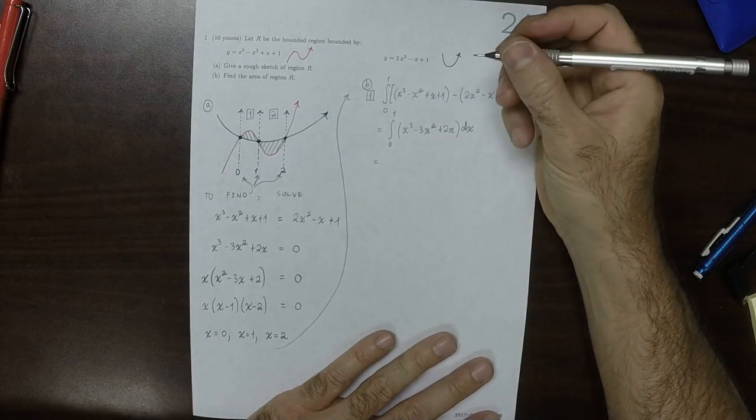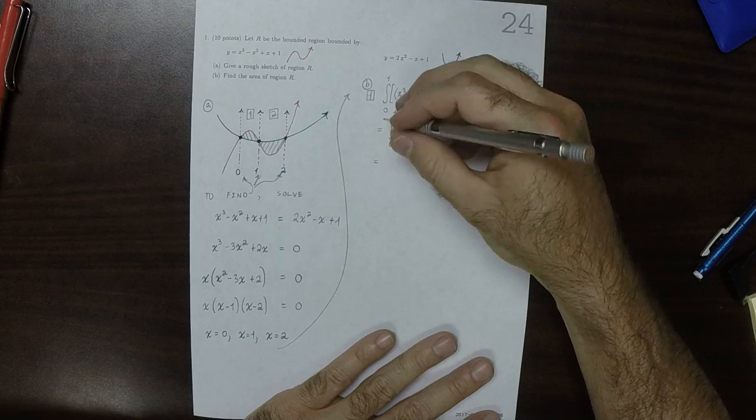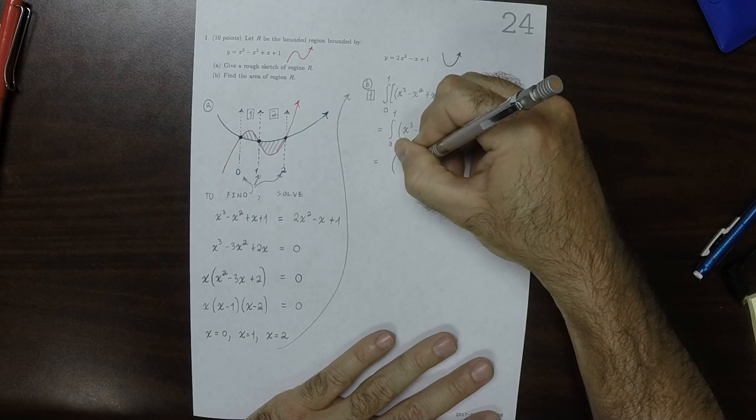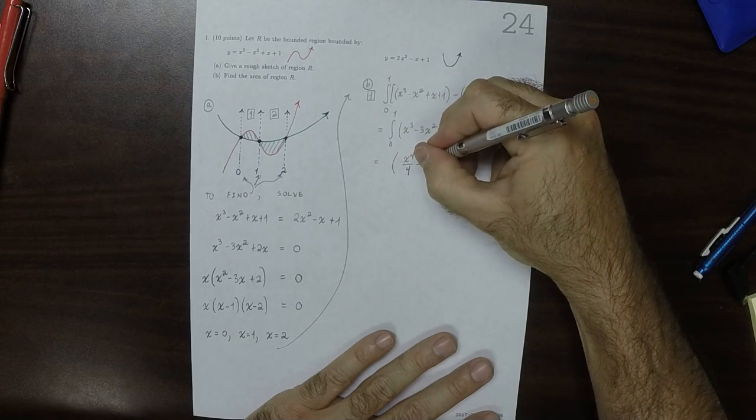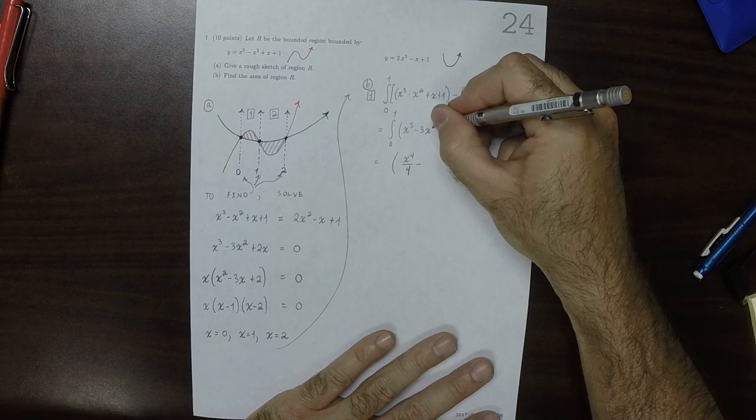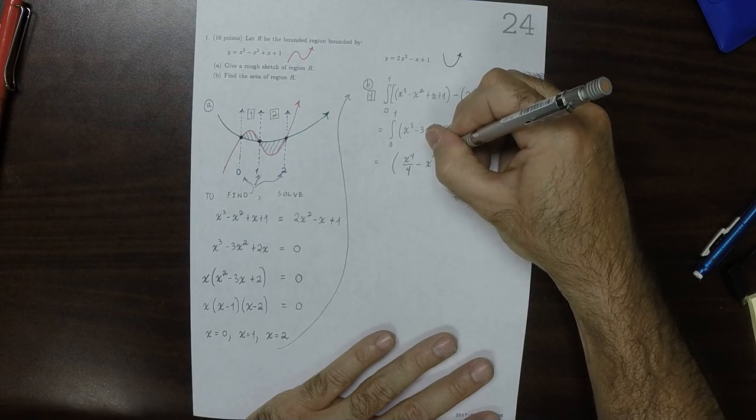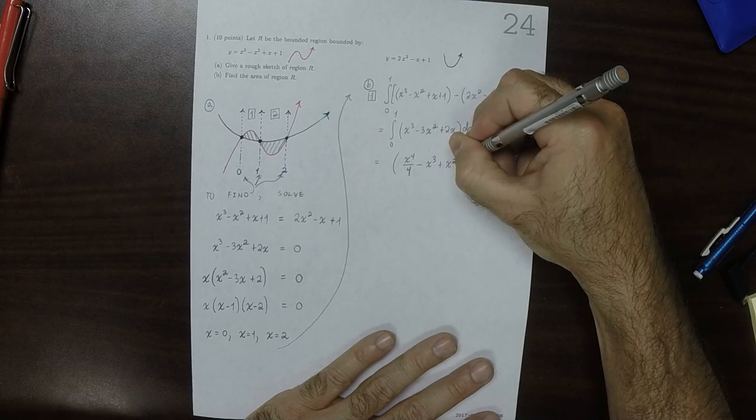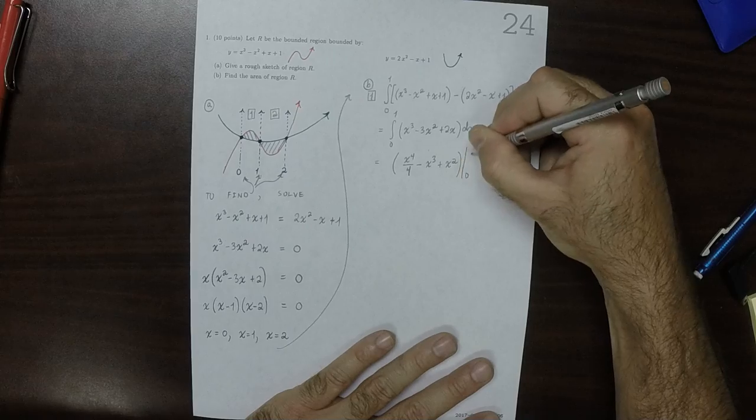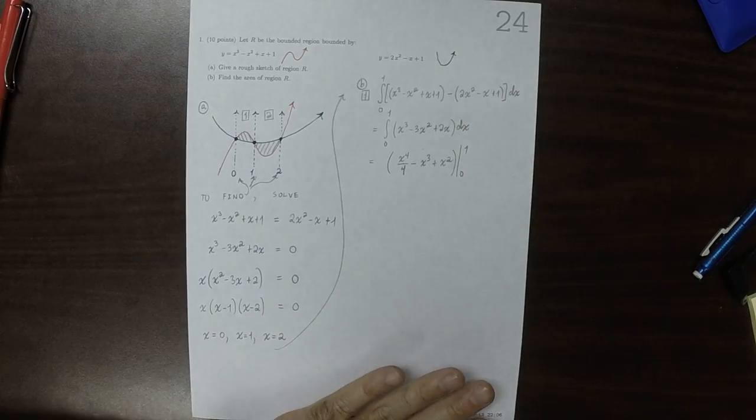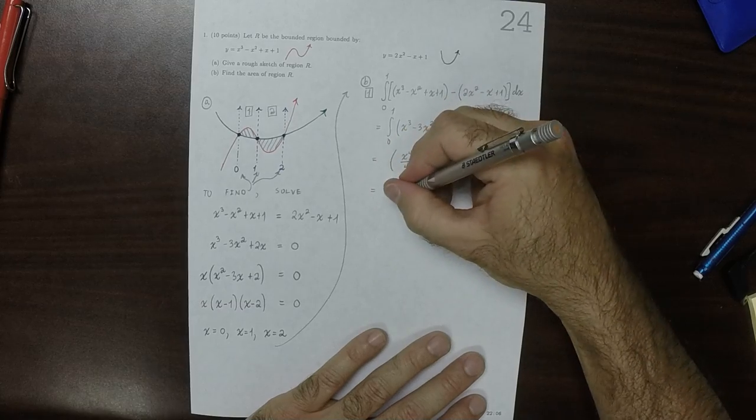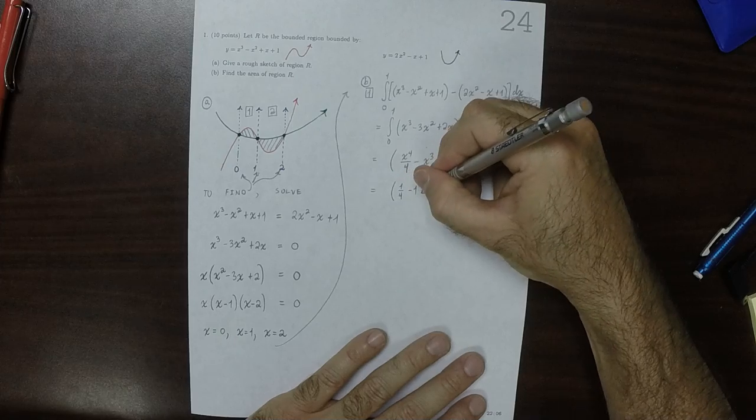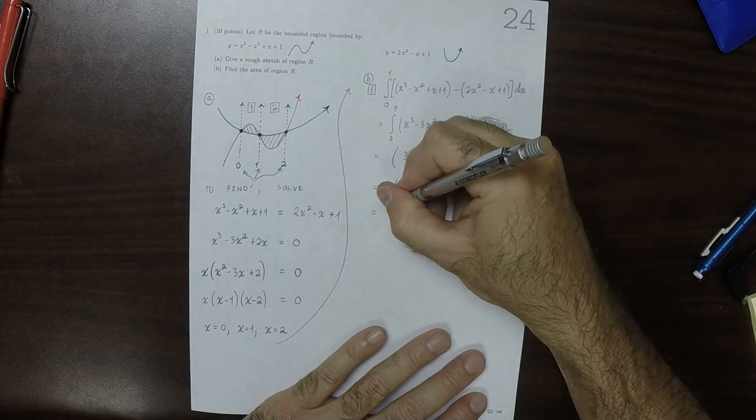Then we can use the fundamental theorem and get x to the 4 over 4 minus, so that'll be x to the 3 over 3, but then there's a 3, so that's just x cubed, and then plus x squared, evaluated from 0 to 1. It's nice that there's a 0 and a 1, that makes it as nice as possible. So that'll be a fourth minus 1 plus 1, which is to say 1 fourth.